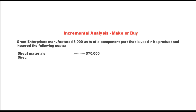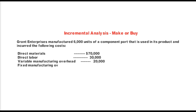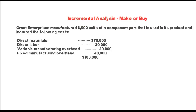Direct materials: $70,000. Direct labor: $30,000. Variable manufacturing overhead: $20,000. Fixed manufacturing overhead: $40,000. So they pay $160,000 total for these 6,000 units of components.